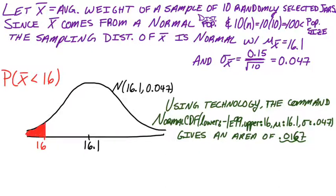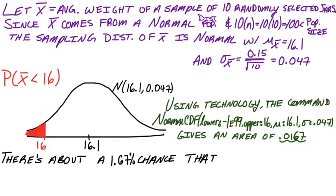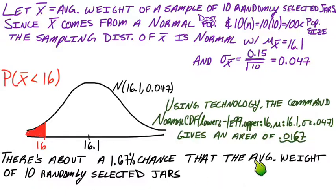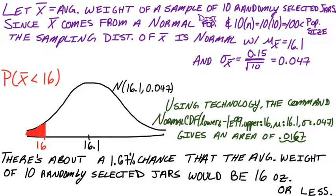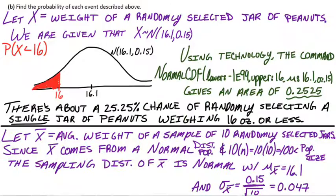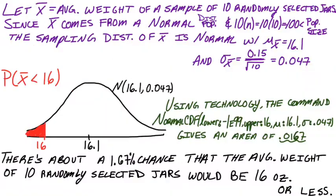To get full credit, we conclude in context: there's about a 1.67% chance that we'd get a sample mean — the average weight of 10 randomly selected jars — that is actually 16 ounces or less. Compare that to the 25.25% chance for just one single jar to be less than 16 ounces. For the sample mean it's much more rare, which is exactly what we predicted. Individuals can be way more variable than sample means.